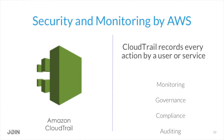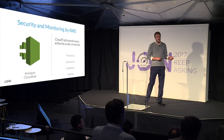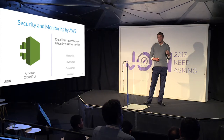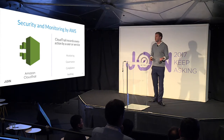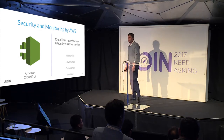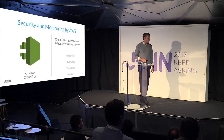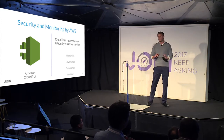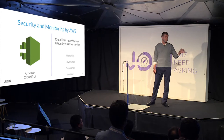CloudTrail is great for monitoring the usage and types of usage across your various users and services. It's good for governance — making sure there are no gaps or loopholes in your permissioning and authorizations. It's great for compliance; AWS actually has documentation showing how CloudTrail can help meet regulatory requirements for your specific vertical. And it's really good for auditing — you can nail down any troublesome users, find where errors are occurring, all that good stuff.